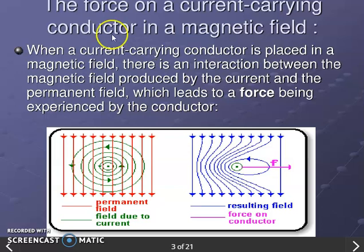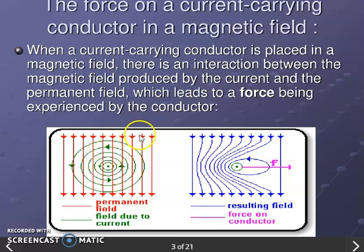Look at the diagram here. This is a permanent magnet with a uniform magnetic field. We have the current-carrying conductor placed within the magnetic field. Because of this arrangement, a force is produced on the current-carrying conductor.